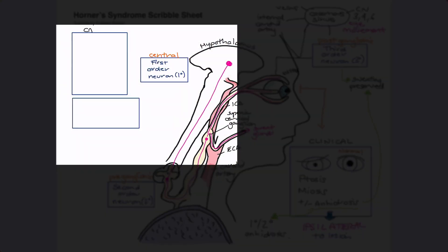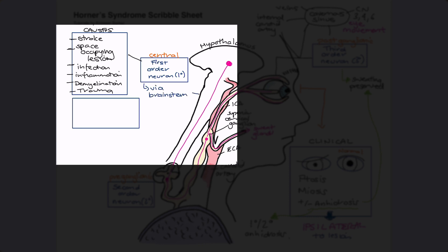Now let's dig into lesions which might impact these neurons at various levels, along with clinical signs to help us localize the lesion. Starting with first order or central neurons: things which can damage this pathway include cerebrovascular events, space-occupying lesions, infective or inflammatory pathologies, demyelination, and trauma. The central neuron runs from the hypothalamus through the midbrain and medulla down to the spinal cord, so lesions may be in the brainstem or cervical spinal cord, and would be associated with cranial nerve signs or signs from the descending tracts.